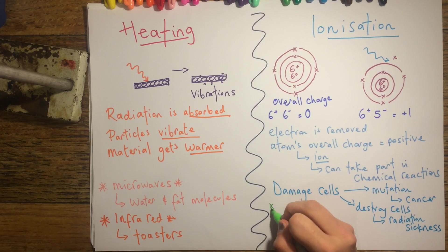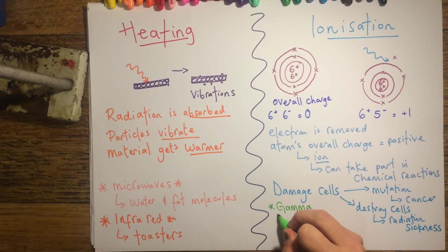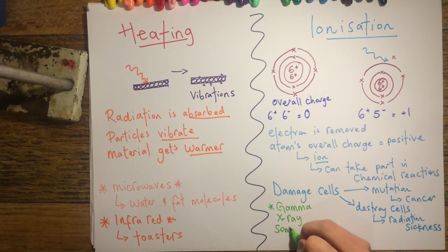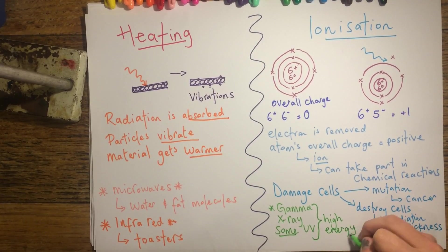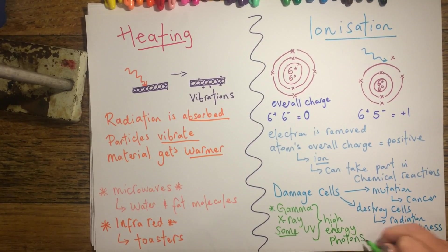The ionising radiations consist of gamma, x-ray, and some of the UV part of the electromagnetic spectrum. This is because they're the only ones that have got high enough energy photons to knock an electron out of its orbit.